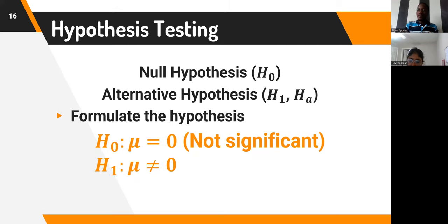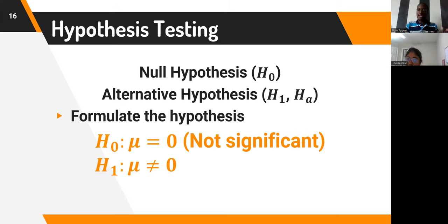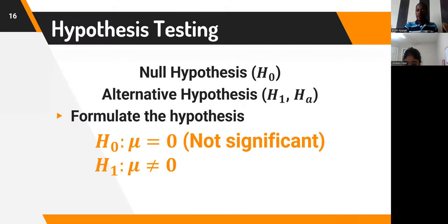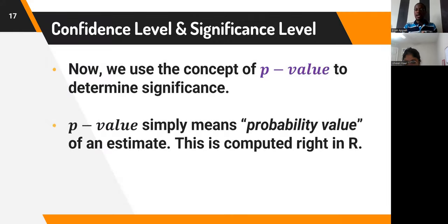If you are testing for statistical significance, the parameter equals zero means that parameter is not significant. The alternative hypothesis would be that it is not equal to zero — whether positive or negative, that is something significant. Once we have this concept of hypothesis testing, we use the concept of p-value to determine significance. The p-value is simply short for the probability value of an estimate, and it is computed in R whenever we perform statistical analysis or tests.